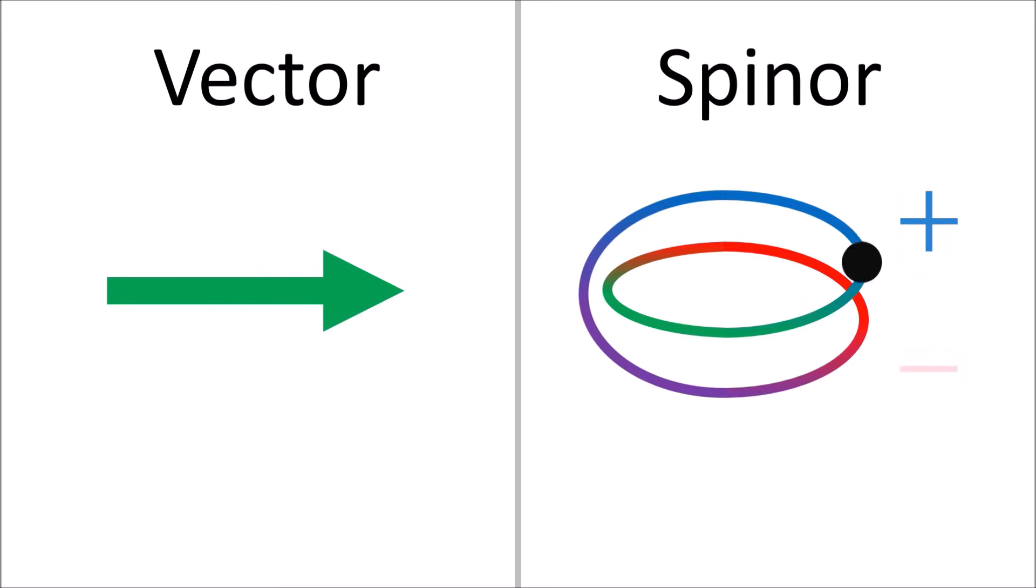But when we turn spinors around 360 degrees, they come back to the negative version of themselves. It requires two full turns, or 720 degrees, to get a spinor back to where it started. The property of requiring two full turns to get back to the starting position is one of the defining properties of spinors.